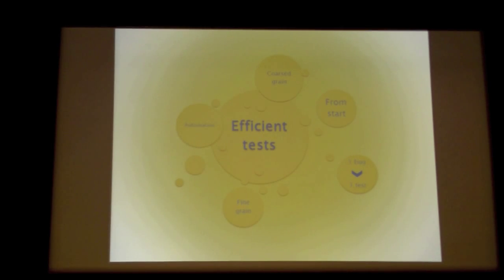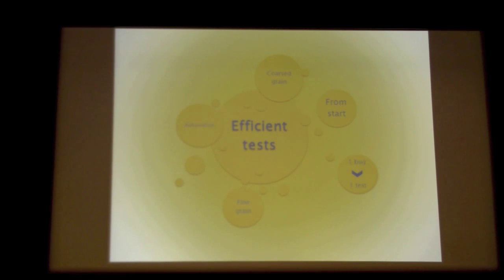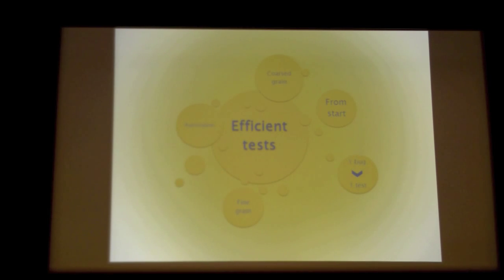To summarize, efficient testing means: first, full automation. Second, mix different kinds of tests — we have three levels but you can define your own. Third, start testing from the very beginning; if you wait one or two months into development it is always too much effort to catch up. And last, when bugs come in, first write the test, then make the fix to make the test pass.